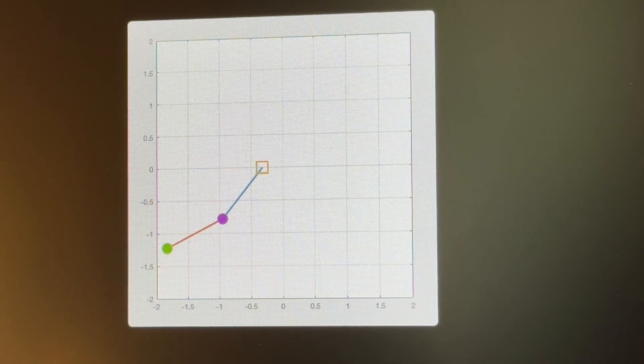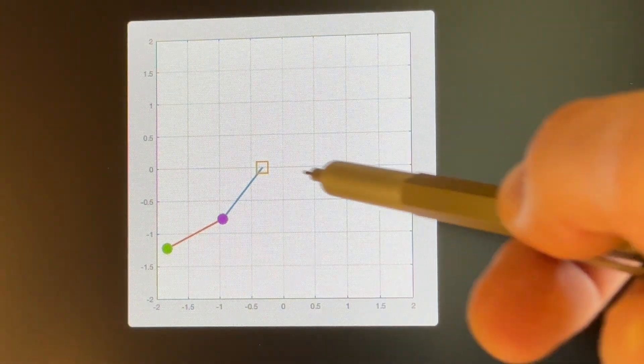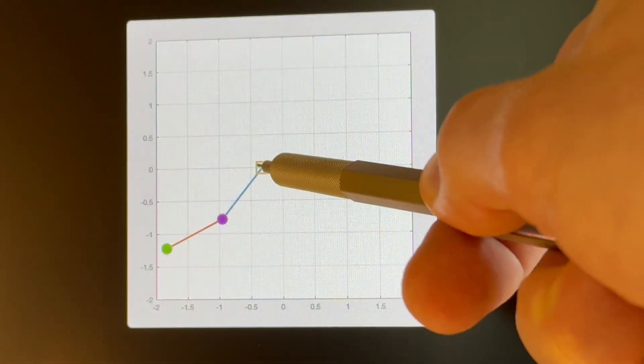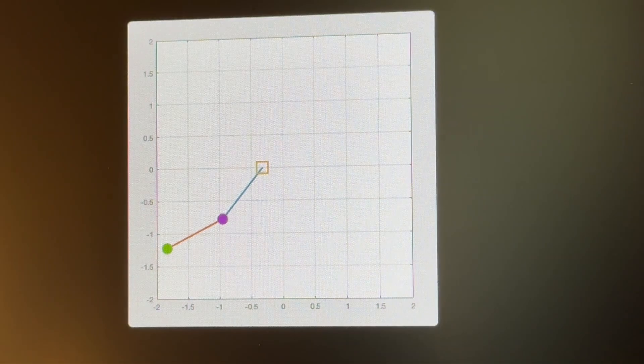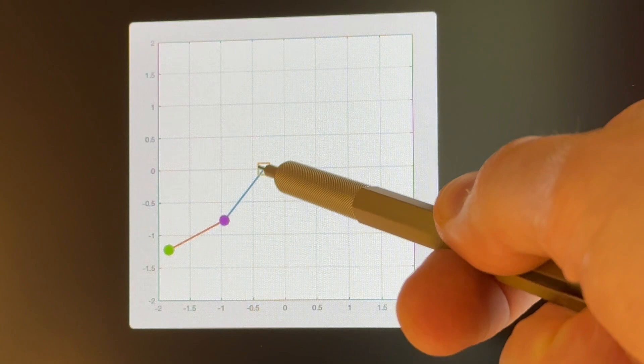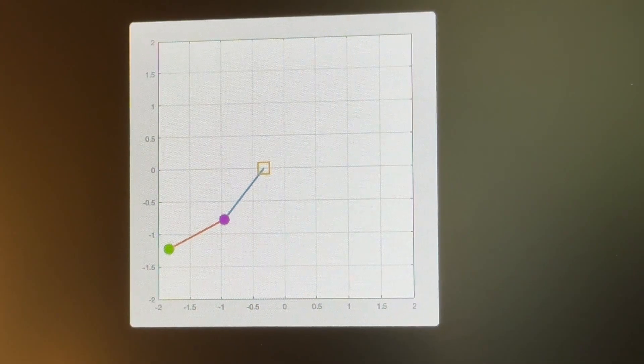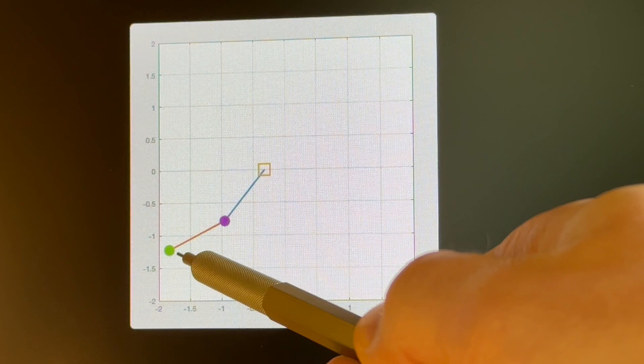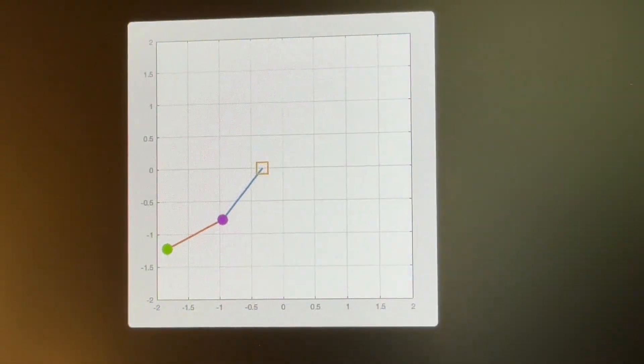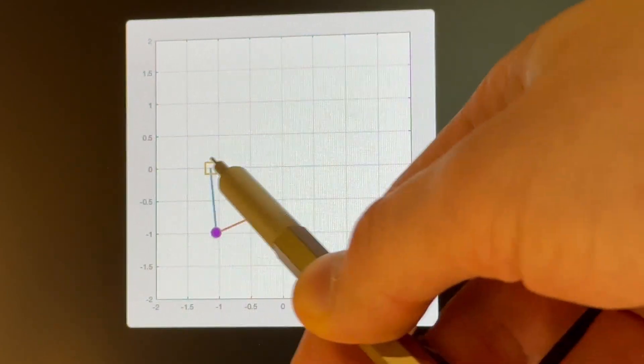It's actually pretty simple. We just let our input signal control the position of the top point where the pendulum would attach to whatever is holding it. Like you can imagine this top point is attached to a guitar string or something like that. Then we measure the x coordinate of the bottom point and output that as our signal. And that's it.